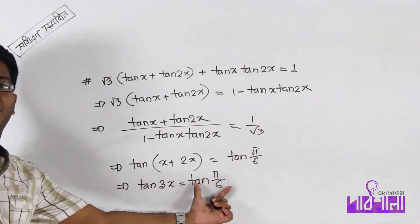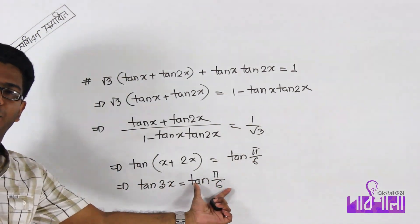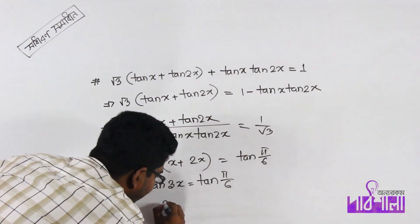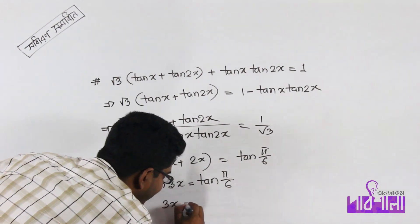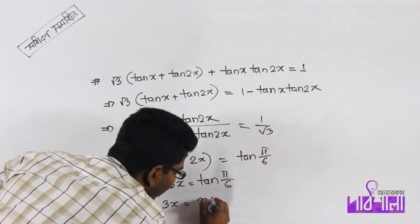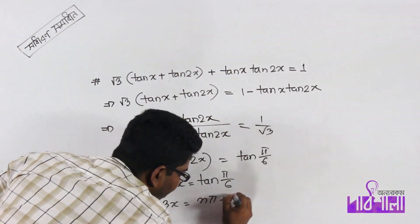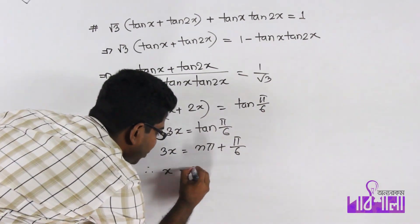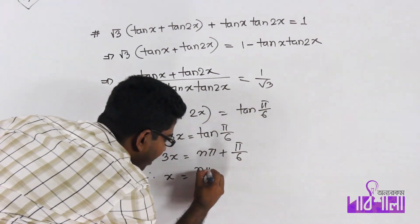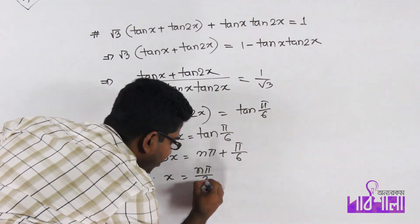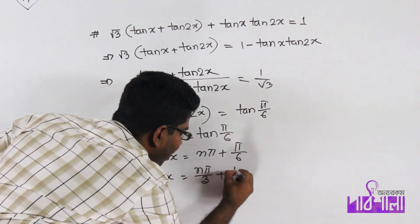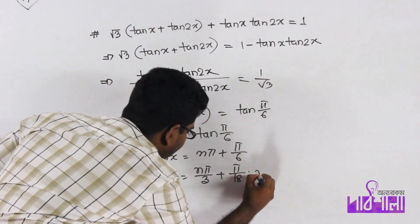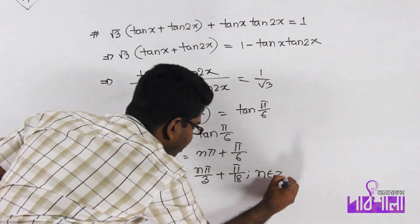Since tan(3x) equals tan(π/6), the general solution is 3x equals nπ plus π by 6. Therefore x equals nπ by 3 plus π by 18, where n belongs to integers.